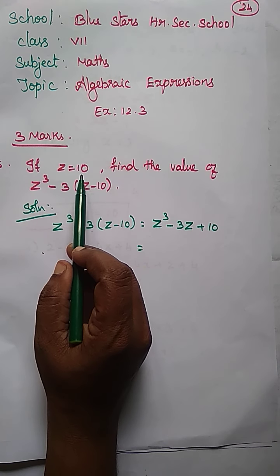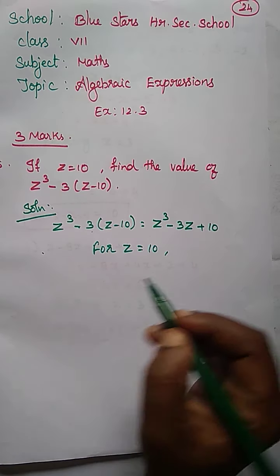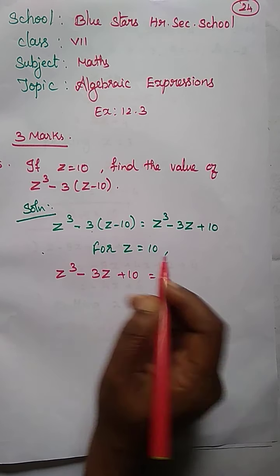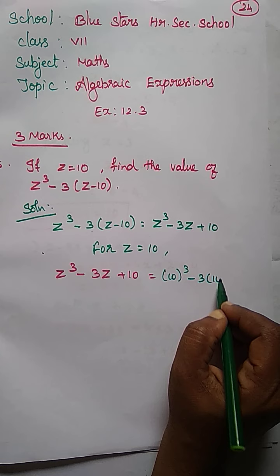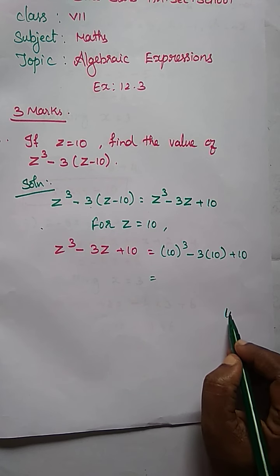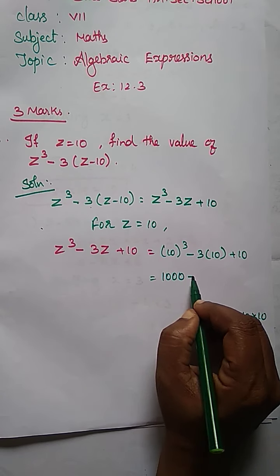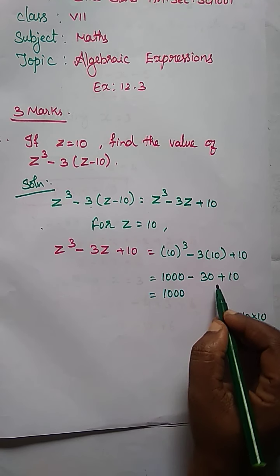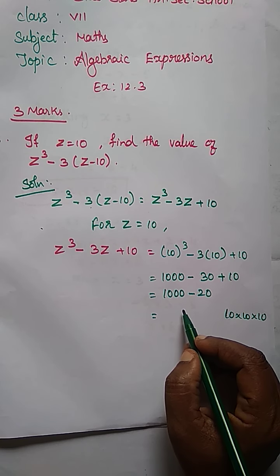Now we substitute the value Z is equal to 10. For Z equal to 10, what we get: Z cube minus 3Z plus 10 is equal to — substitute the value of Z is 10. So, 10 cube minus 3 into 10 plus 10. But 10 cube is 10 into 10 into 10: 10 tens of 100, 100 into 10 is 1000. So, 1000 minus 30 plus 10 is minus 20. 1000 minus 20. What we get? 980.